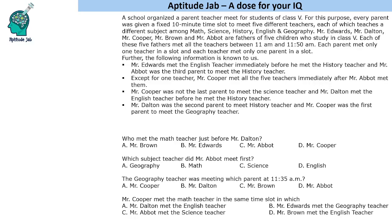There were 5 teachers and 5 subjects: Math, Science, History, English, and Geography. There were 5 parents: Edwards, Dalton, Cooper, Brown, and Abbott. They met the teachers between 11am and 11:50am in 10-minute slots, and each parent met one teacher per slot. So we have a unique parent-teacher combination.